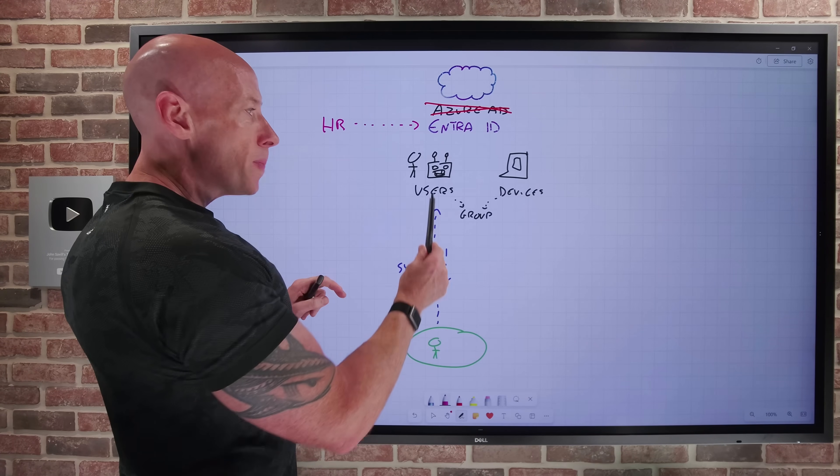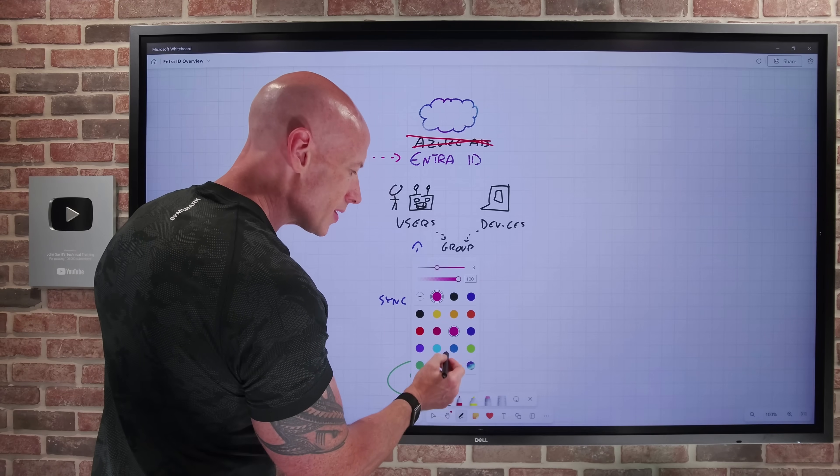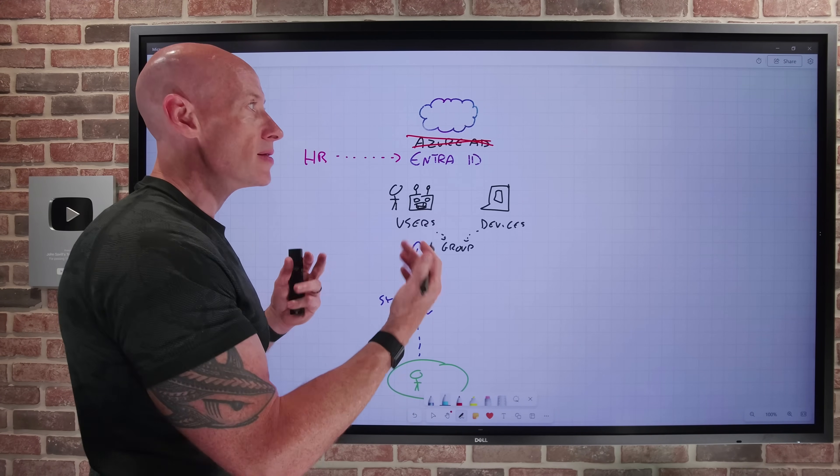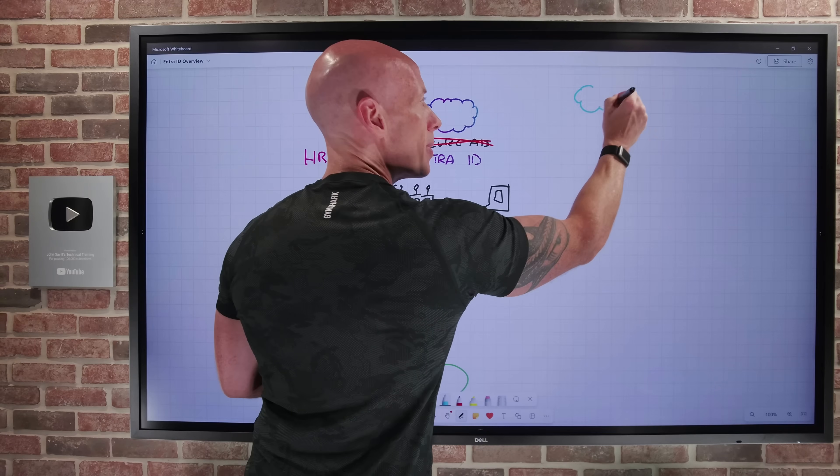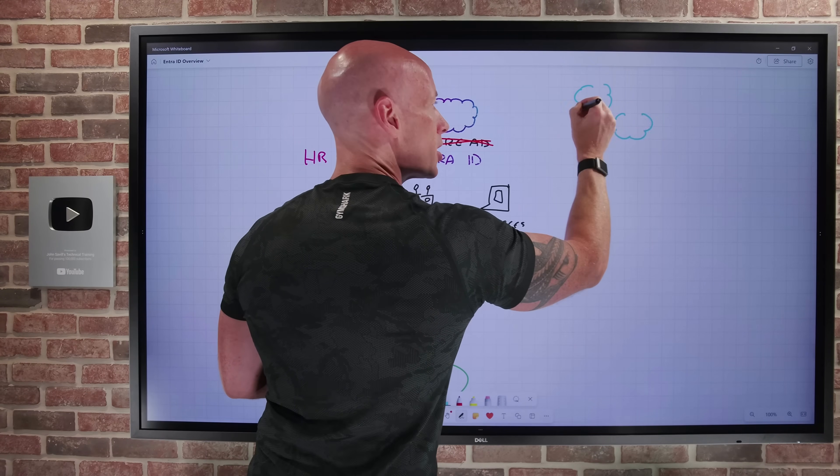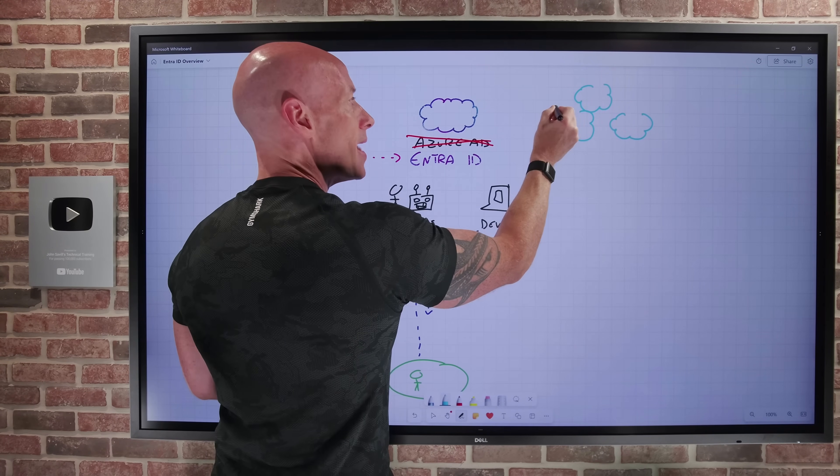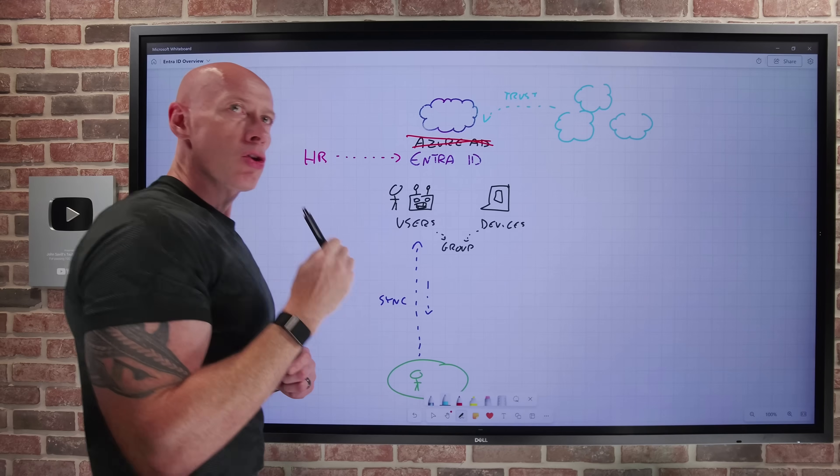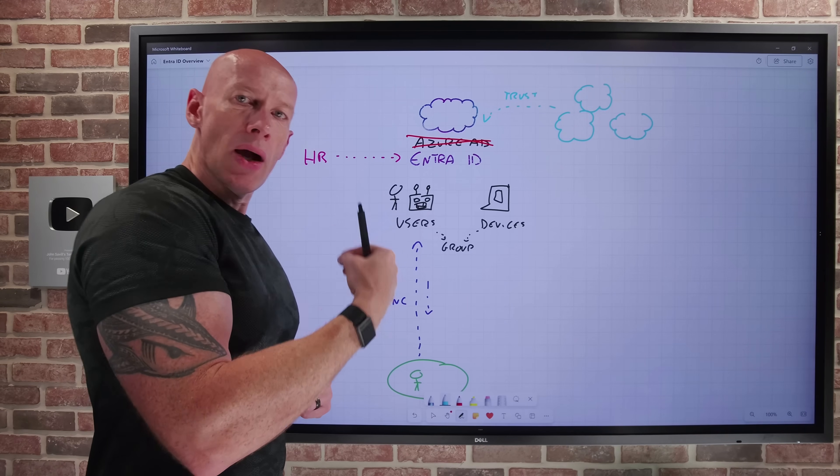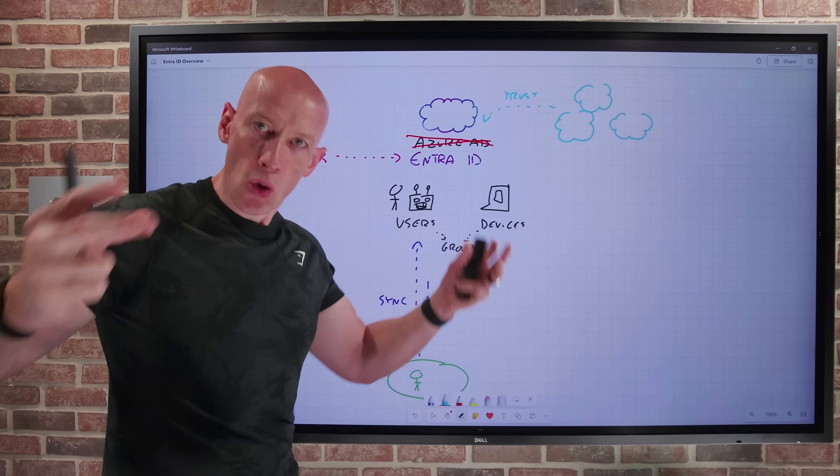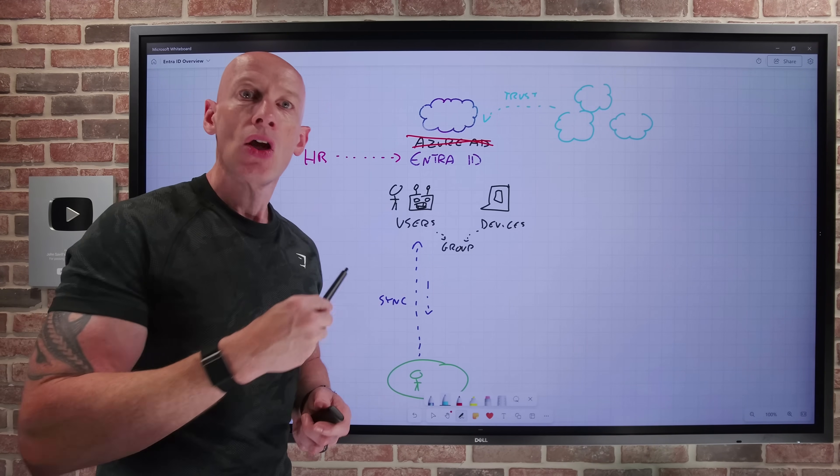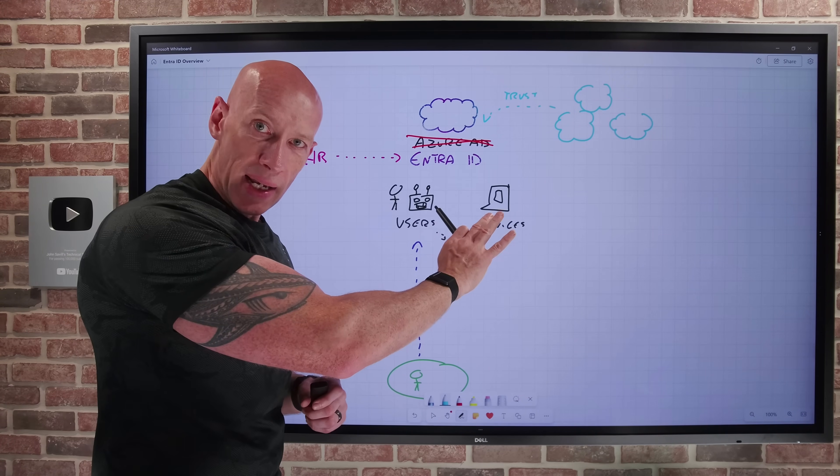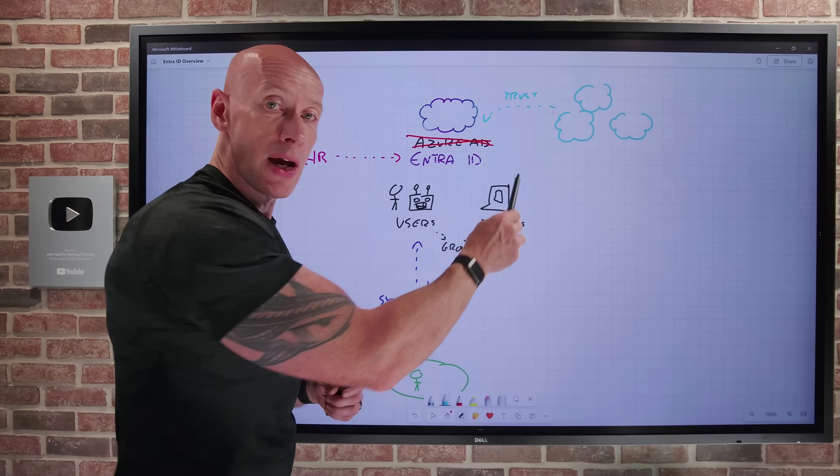I've talked about users and devices. What also is going to happen here, there are many other services in the cloud. Some of them might be Microsoft services, some of them third parties, and these all trust your particular Entra ID tenant, your users, your groups, your devices, for their identity purposes.